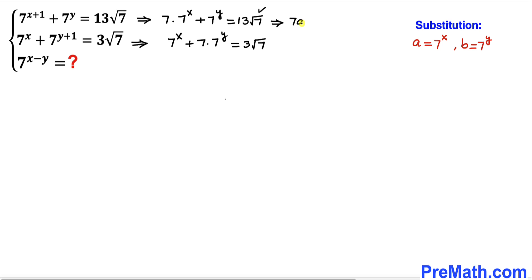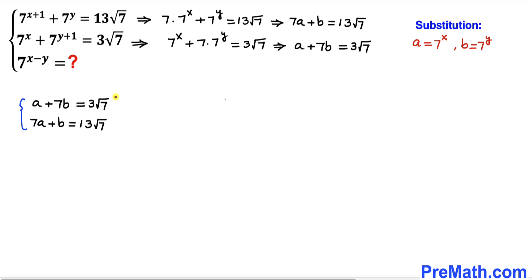With this substitution, the first equation becomes 7a + b = 13√7, and the second equation becomes a + 7b = 3√7. We now have a system of two equations with two variables.